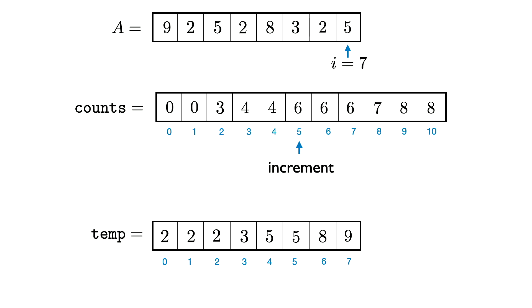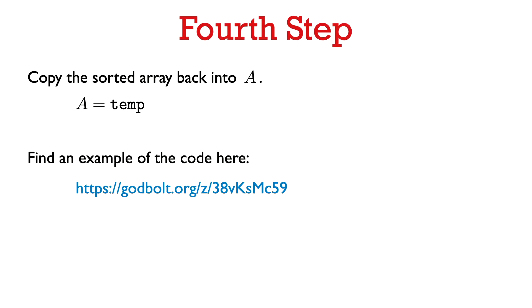Now we can see that temp is completely sorted. The algorithm just has one more step — copy temp back into A. From this description of the algorithm, it should be easy to see how to write this in code. An example of this code in C++ is available at the Godbolt link provided.